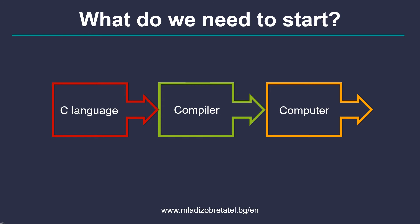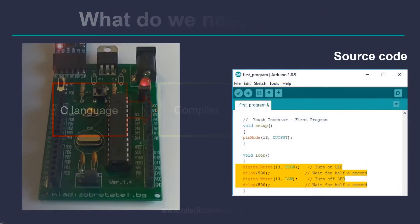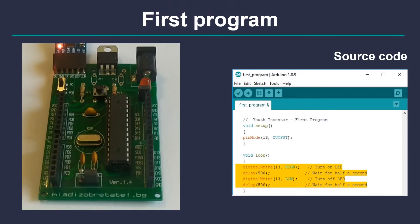Now let's check our first program. Our first program is pretty simple — we want to turn on and off an LED every half a second. Take a look on the left to see how the LED is blinking. Our programming code is on the right. The body of our program is only 4 rows. With the first row we tell the computer to turn on the LED connected to pin 13. The second row says don't do anything for half a second.